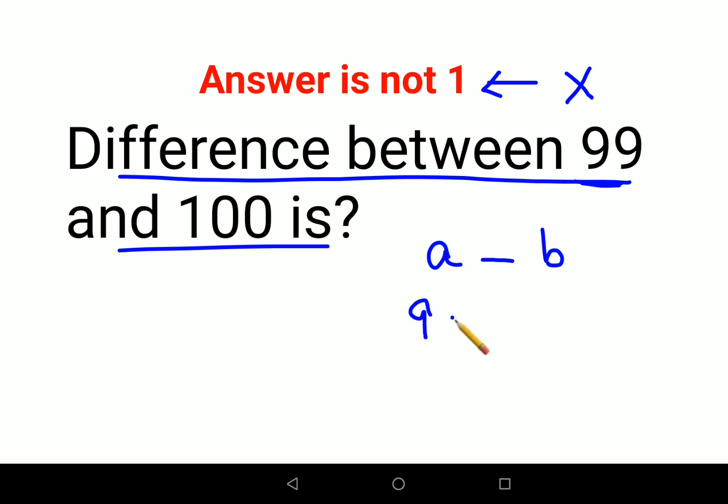So in this case, 99 is my first quantity. I will write 99 minus 100. Your answer comes out to be minus 1, not just 1.